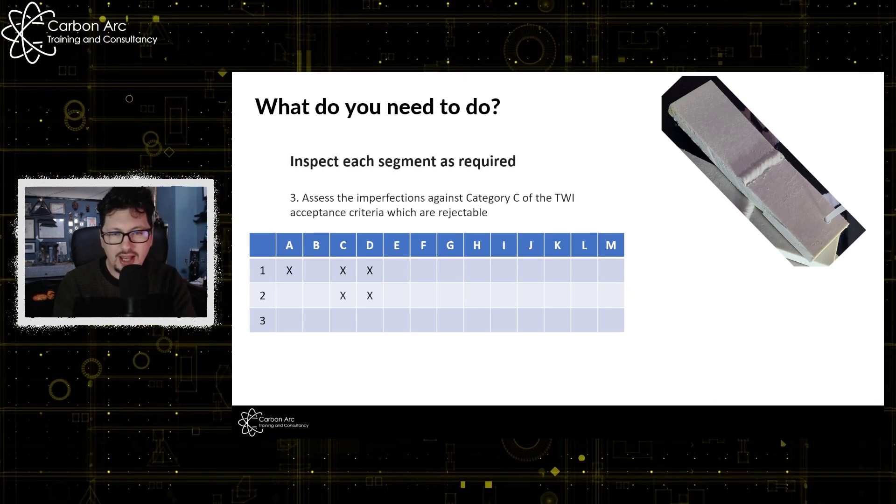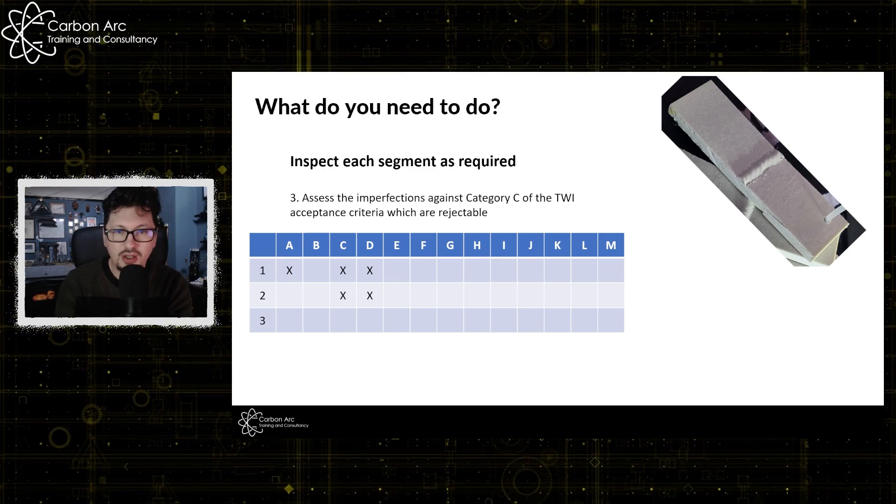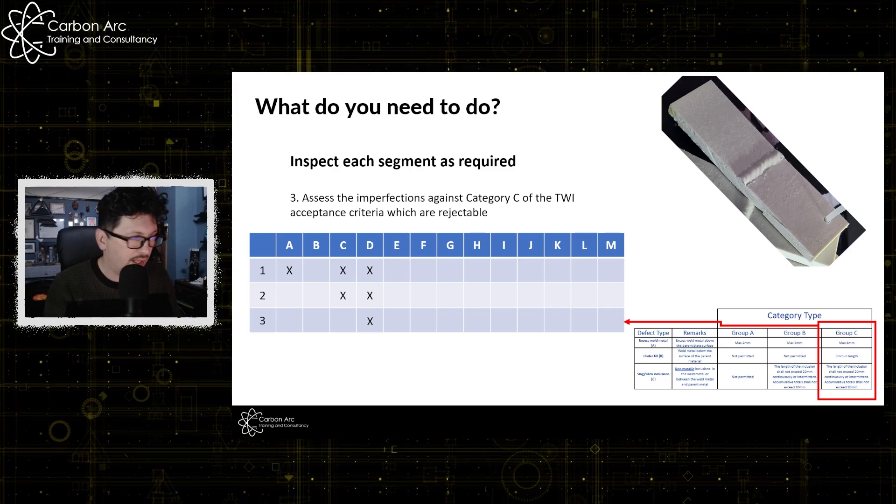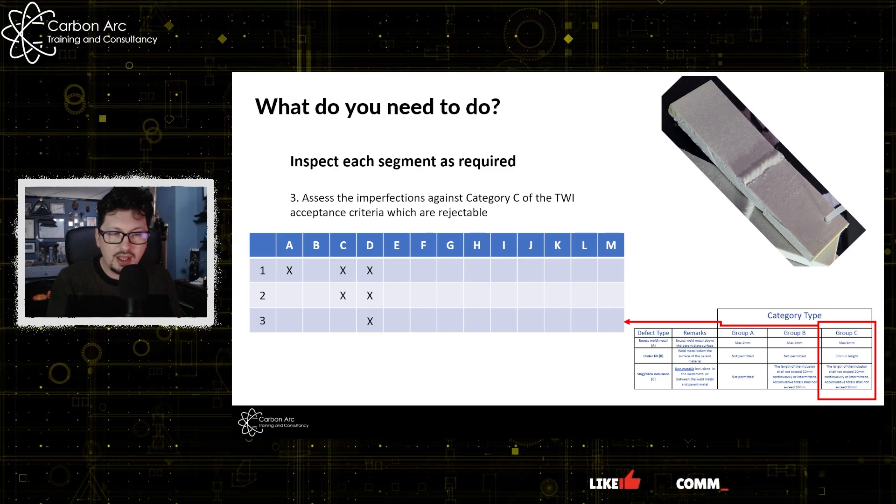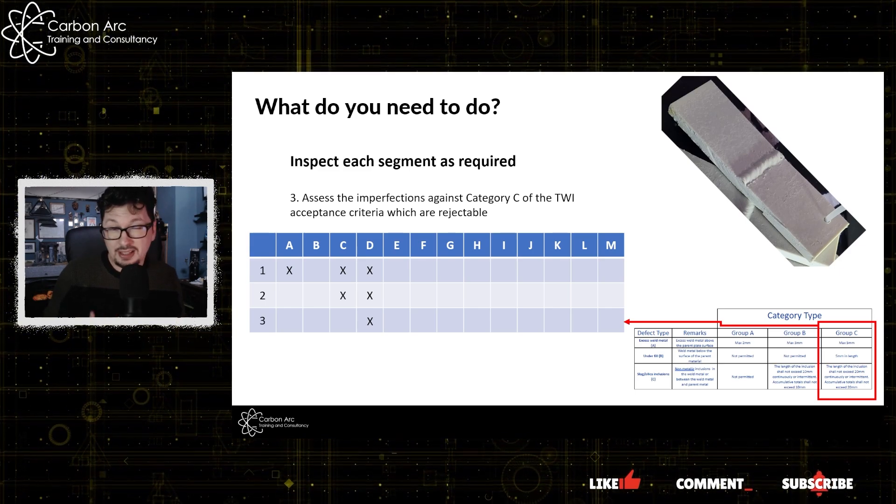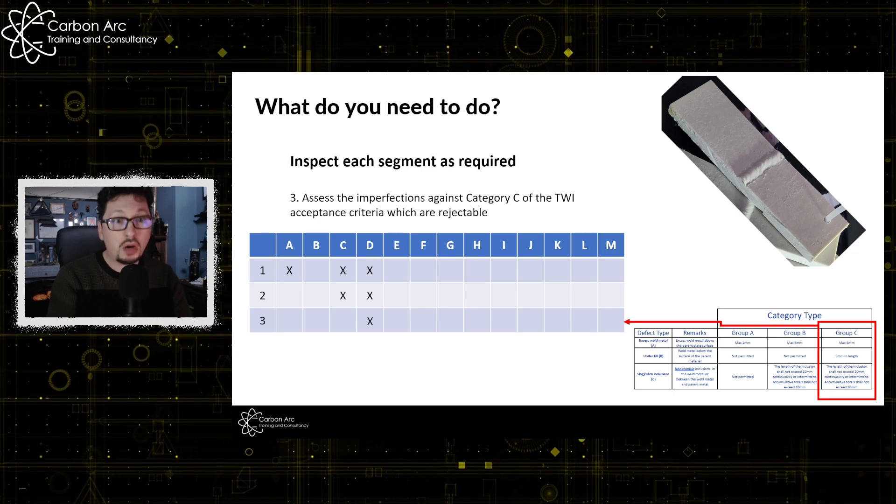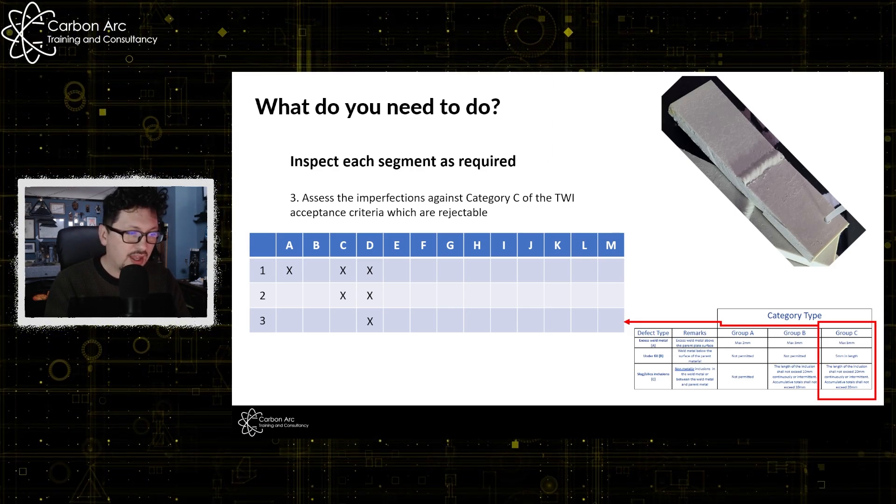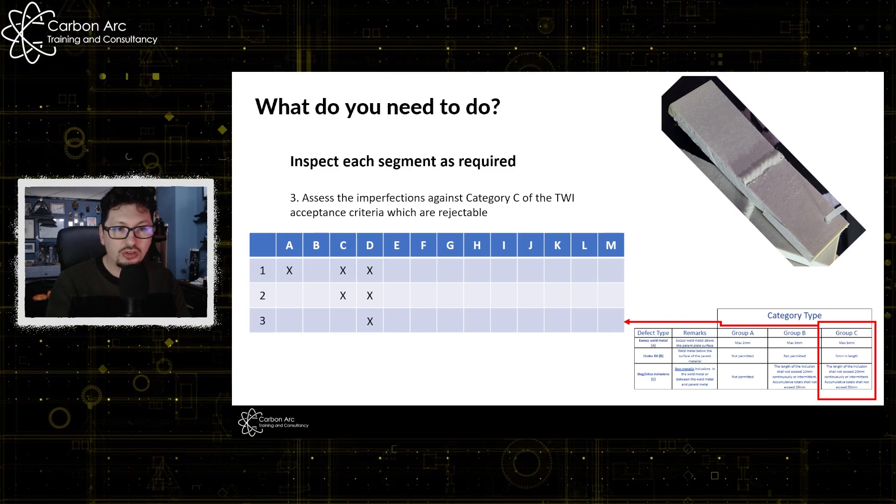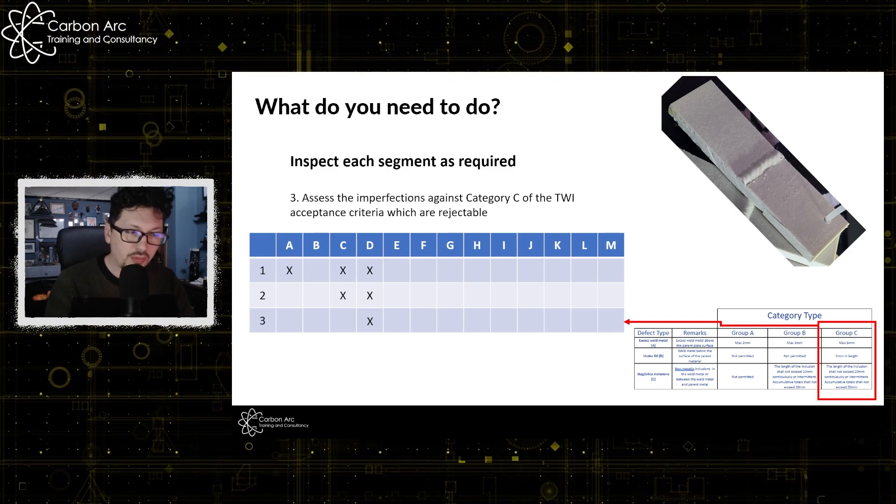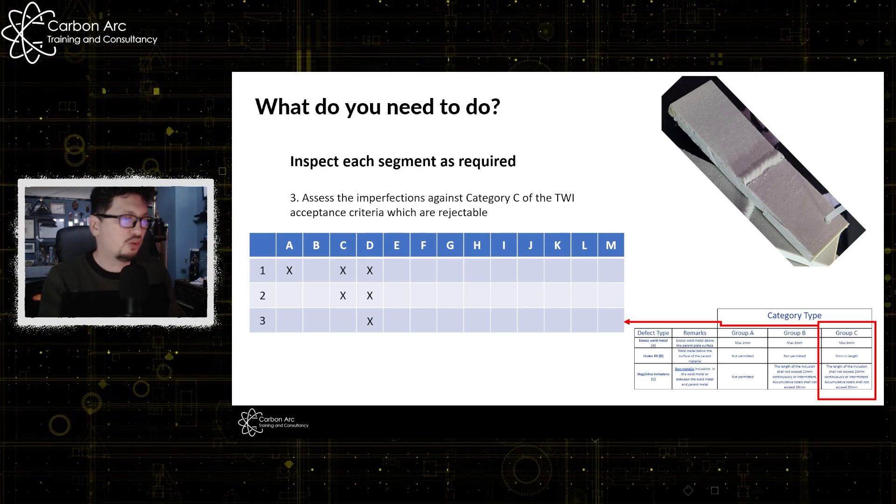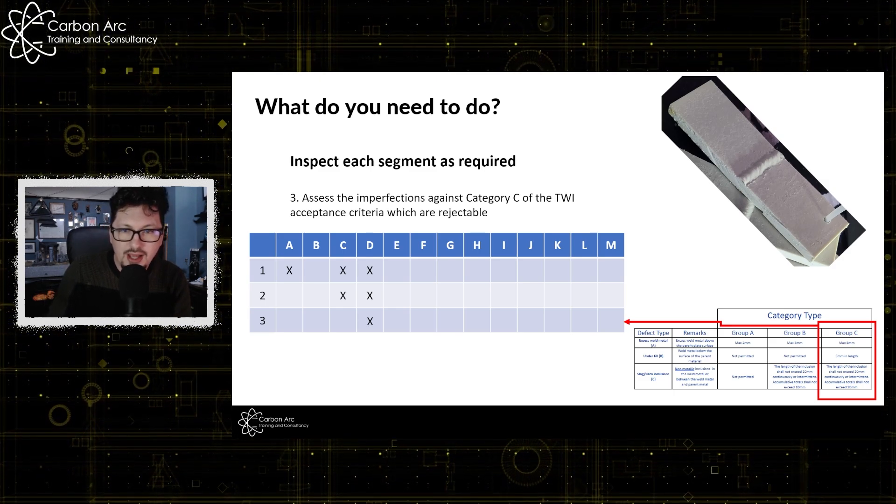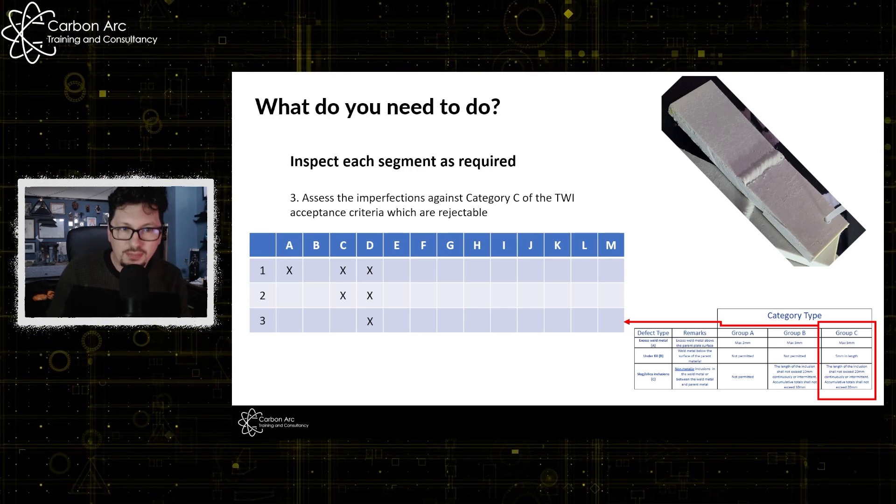And then I might look at line three and say category C, which are rejectable. So category three, I'm going to reject only the one now. So it'll only be whatever my D indication is there. So the idea here is it's a bit like using 5817's acceptance criteria. You'll start with what have you got. Category A is more stringent, so it'll reject more things. And then category C is less stringent, so it'll reject less things is generally how that will work. You can see the acceptance criteria in the bottom there. Group A or category A basically has everything not permitted, where group C or category C has everything or a much wider acceptance criteria on that.